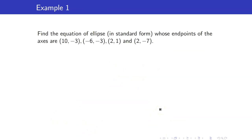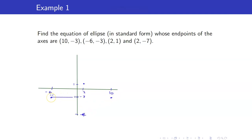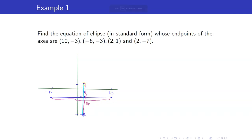Let us find the equation of an ellipse in standard form whose endpoints of the axes are the following points. Let us start by graphing the points: (10, −3), (−6, −3), (2, 1), and (2, −7). The first two points define the major axis because it is longer, with length 10 minus (−6) equals 16. The other two define the minor axis, with length 1 minus (−7) equals 8.